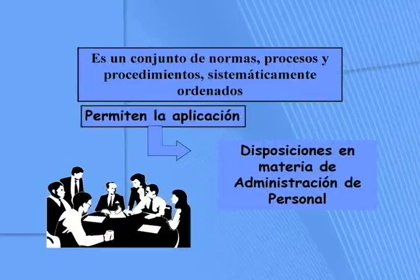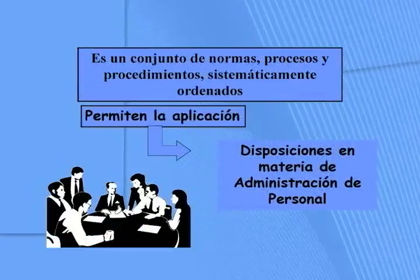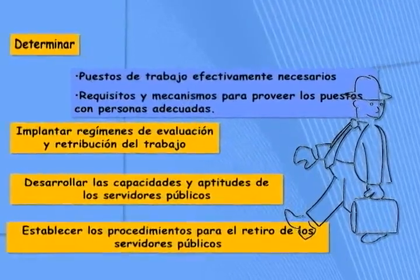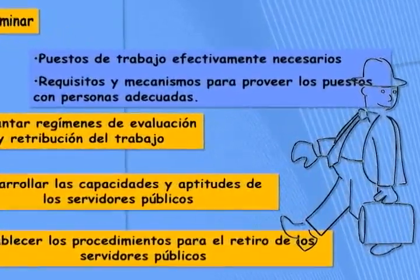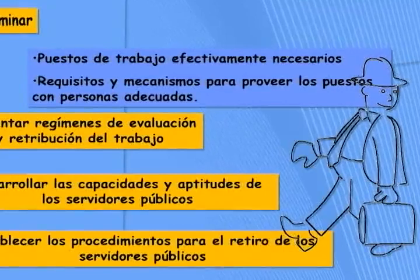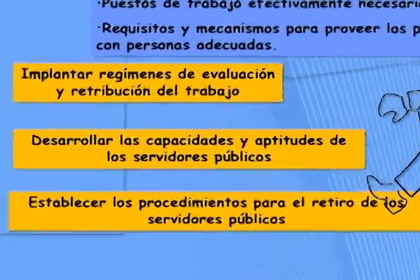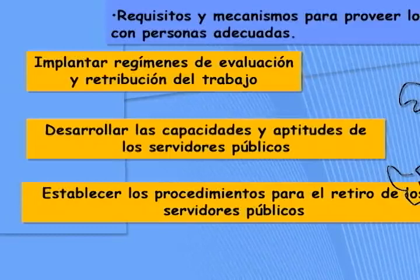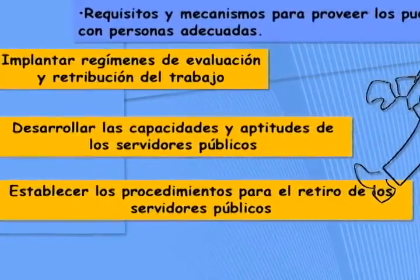El objetivo principal de este sistema es determinar los puestos de trabajo efectivamente necesarios, identificando todos los puestos de la estructura organizacional de una entidad pública. También es parte de este objetivo determinar los requisitos y mecanismos para proveer los puestos con personas adecuadas, implantar regímenes de evaluación y retribución del trabajo, desarrollar las capacidades y aptitudes de los servidores públicos, y establecer procedimientos para el retiro de los servidores públicos.